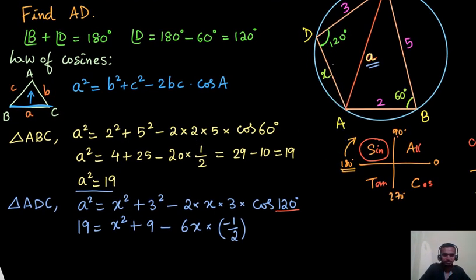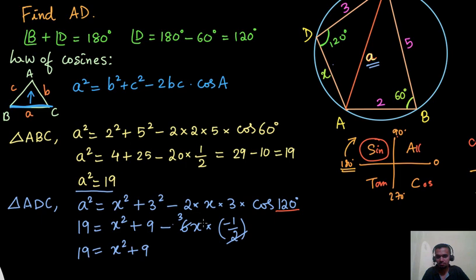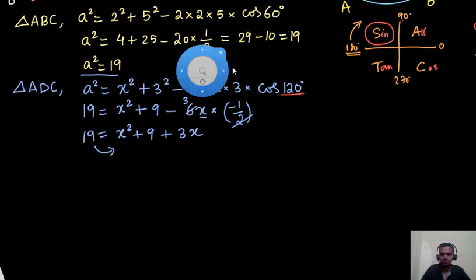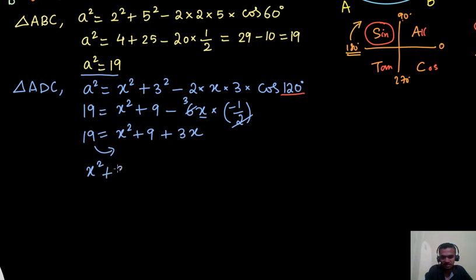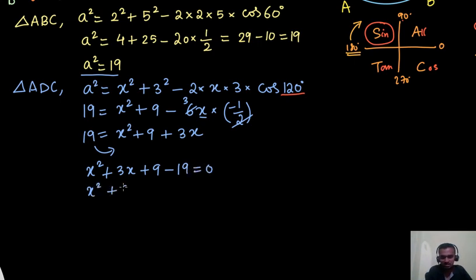Now let us simplify. We have 19 = x² + 9 + 3x (since −6x·(−½) = +3x). Bringing 19 to the other side: x² + 3x + 9 − 19 = 0, which gives x² + 3x − 10 = 0.